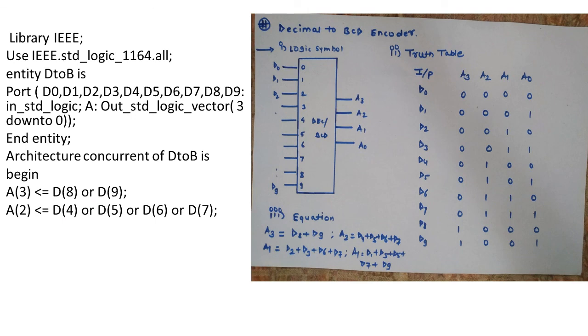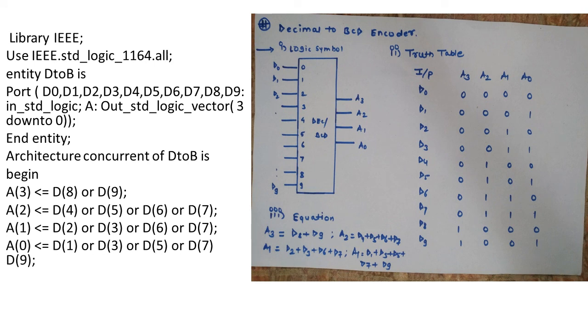Similarly a2 has addition of d4, d5, d6, d7. So it is phrased using OR gates. a1 has d2, d3, d6, d7 addition and lastly a0 as d1 or d3 or d5 or d7 or d9. So this is going to be implementation using concurrent style of model.